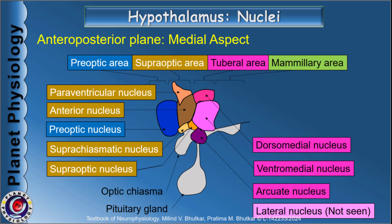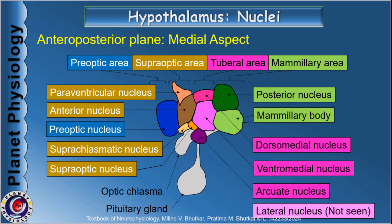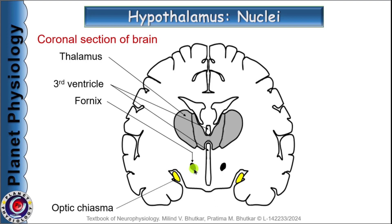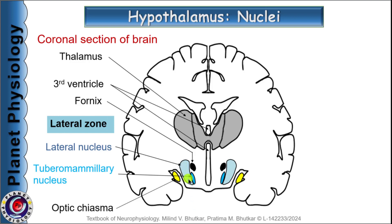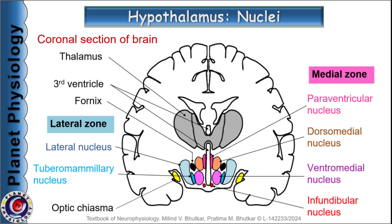The last nuclear group is the posterior group or mammillary area, which includes the mammillary body and posterior nucleus. Some authors divide hypothalamic nuclei into medial zone and lateral zone, with the landmark for this division being the fornix — a bundle of nerve fibres connecting the hippocampus, septal nuclei, and mammillary bodies. In the coronal section of the brain, nuclei lateral to the fornix form the lateral zone, which includes the lateral nucleus and tuberomammillary nucleus, while the region between the fornix and third ventricle forms the medial zone, containing all remaining nuclei including the paraventricular nucleus.